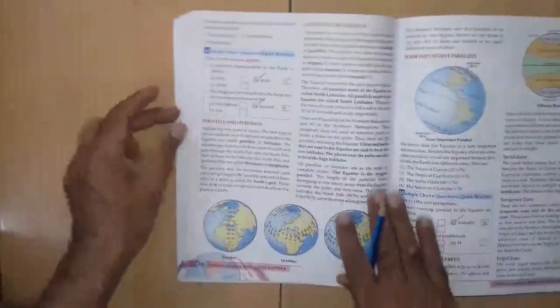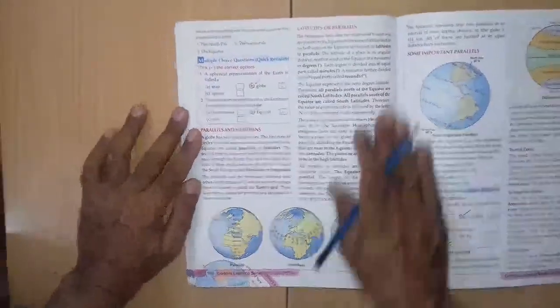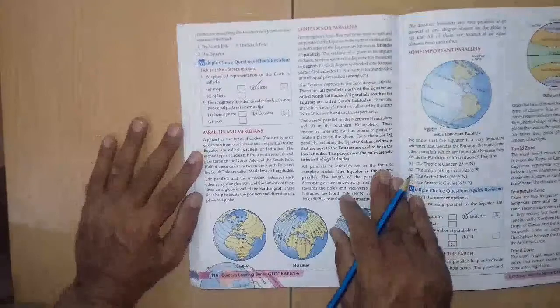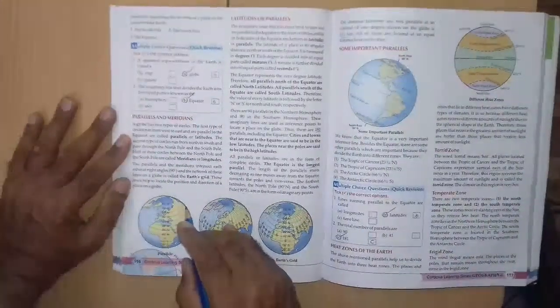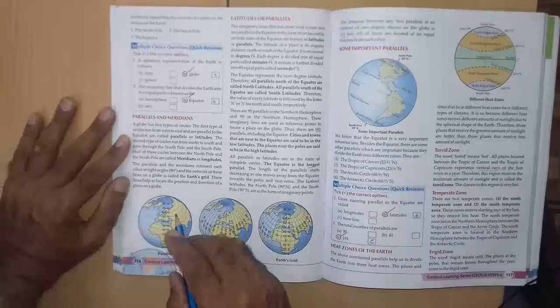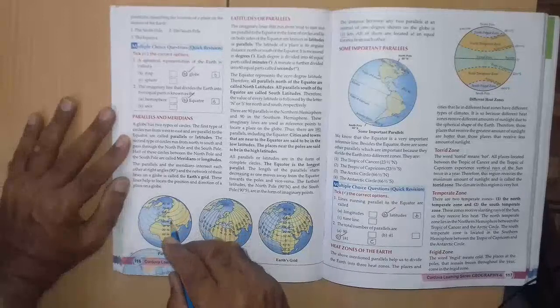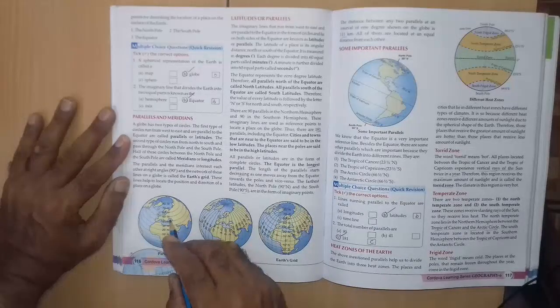Page number 116. Multiple choice questions. Tick the correct options. Question 1. A spherical representation of the earth is called a dash. A map, B globe, C sphere. Right answer is B globe.